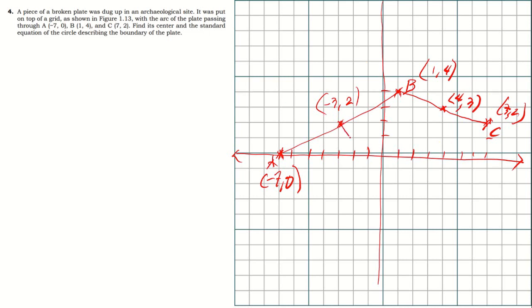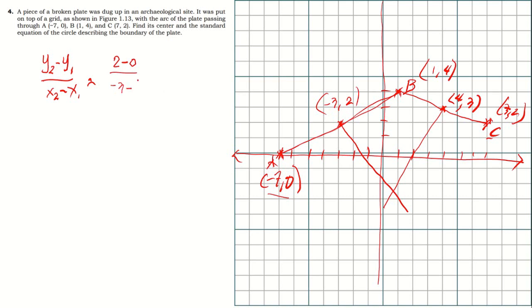Now we find the slope of chord AB using points negative seven, zero and midpoint negative three, two: slope equals y₂ minus y₁ over x₂ minus x₁, which is two minus zero over negative three minus negative seven, giving two over four, which equals one half. So the slope of chord AB is one half.